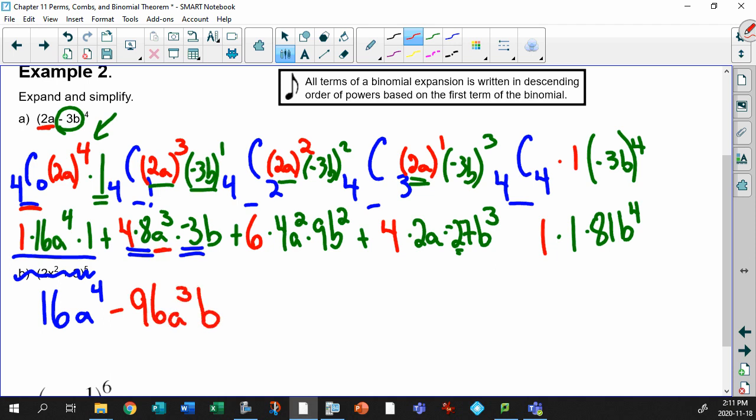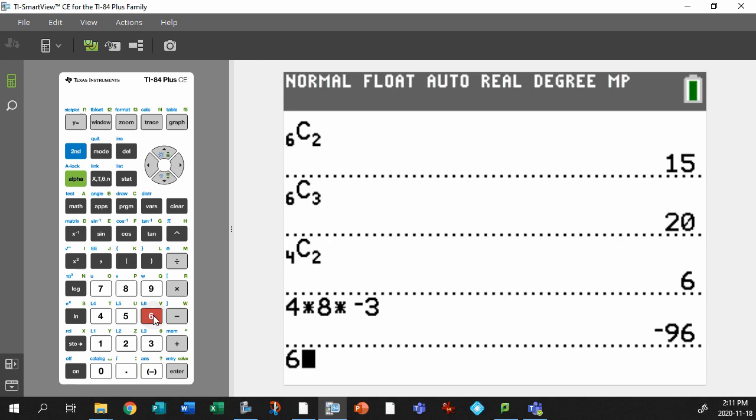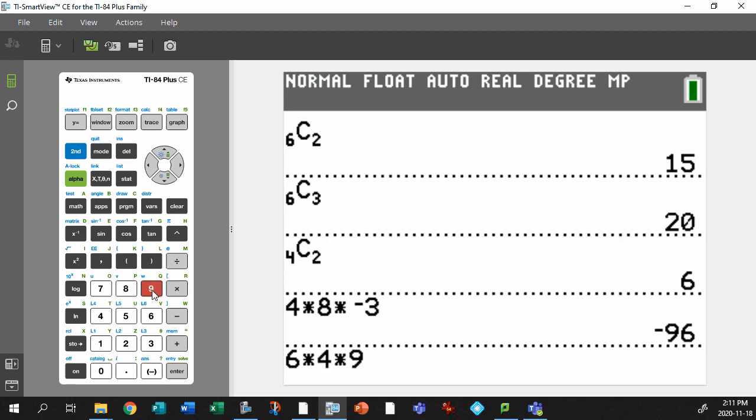Minus 96a cubed b. Plus 6, 4, 9, let's do that one. 6 times 4 times 9, works out to be 216. Holy smokes. So this is 216a squared b squared.